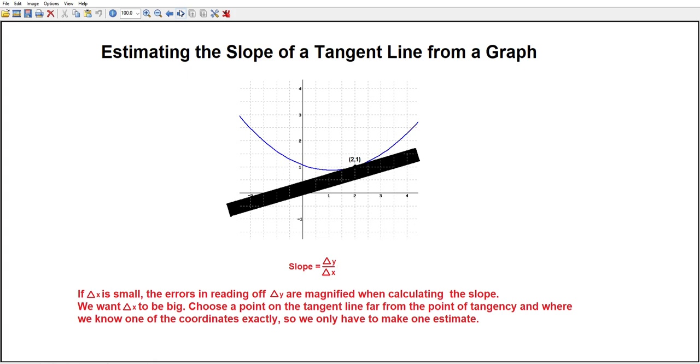So we want delta x to be big. So we want to choose a point on the tangent line far from the point of tangency and where we know one of the coordinates exactly, so we only have to make one estimate.